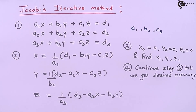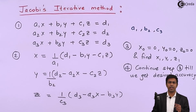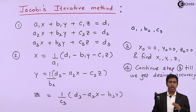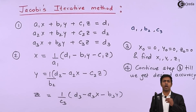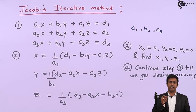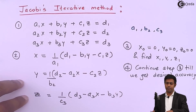The desired accuracy is achieved when the values of consecutive iterations are the same. For example, if in the seventh iteration you get x7, y7, z7 and in the eighth iteration x8, y8, z8 are similar — if x7 = x8, y7 = y8, and z7 = z8 — then we have reached the desired accuracy, and the values x8, y8, z8 are our final answers.